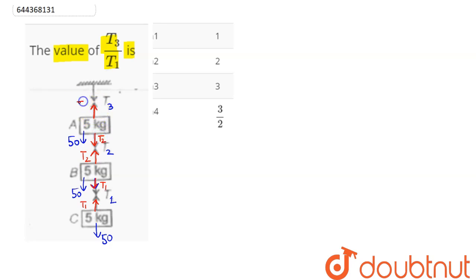Here this tension is given as T3. So for C block we can say the equation comes as T1 upward and 50 downward. So we have T1 equal to 50.